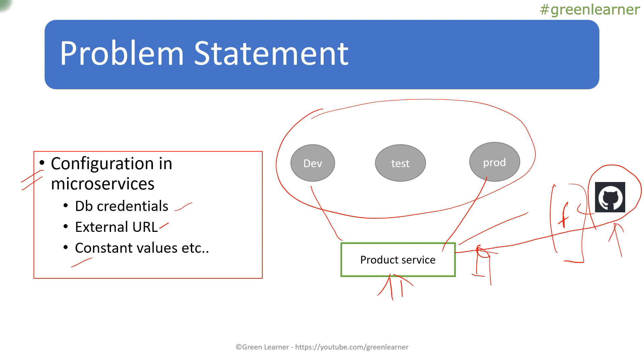We can have a profile specific, environment specific properties file here. So wherever your product service is deployed, whether it is in dev environment, test environment, prod environment, accordingly it will pick the properties from the GitHub here, central repository here. Anyone can see, anyone can do the changes as per the requirement of your use case. This is how we can use the centralized configuration management in microservices. It's very useful.